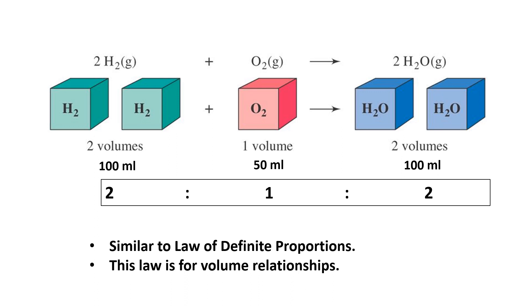This law can be illustrated by the following example. Two volumes of hydrogen gas combined with one volume of oxygen gas to form two volumes of water vapor. Ratio of volumes of hydrogen, oxygen and water is 2:1:2, which is a simple whole number ratio. If 100 ml of hydrogen gas combines with 50 ml of oxygen, it will form 100 ml of water vapors.